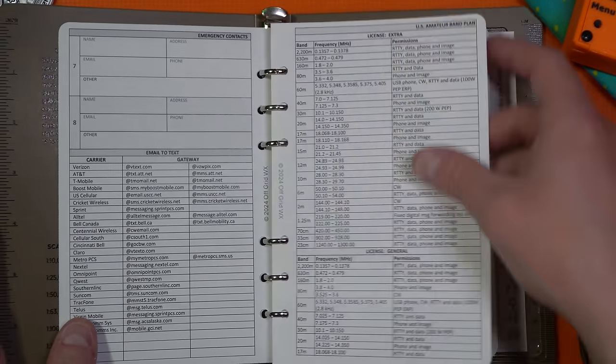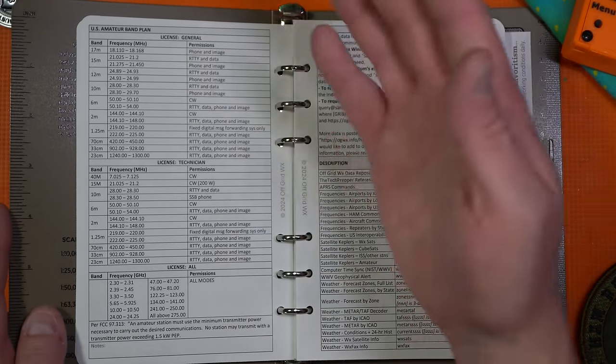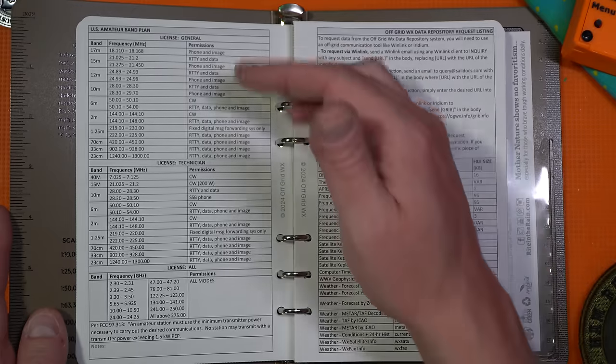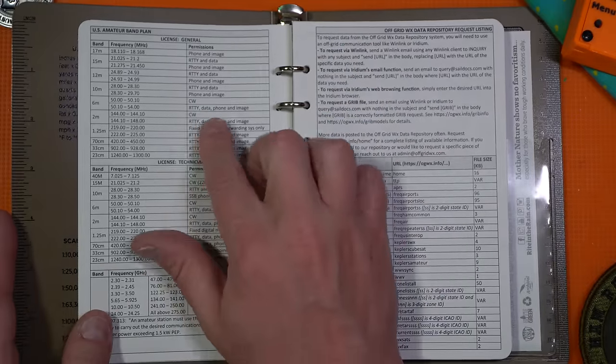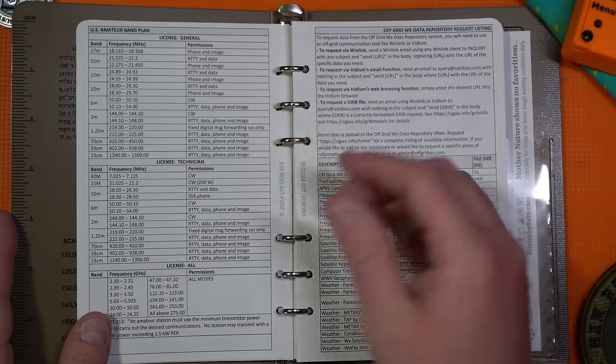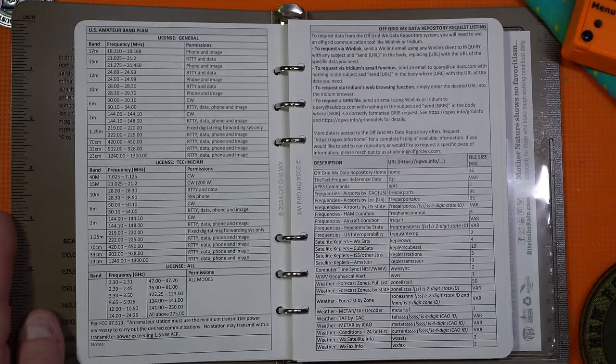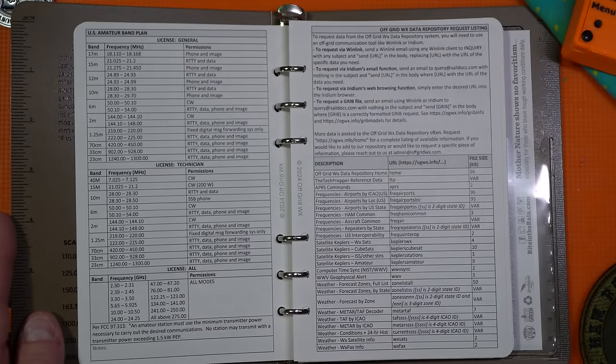Then it covers the band plan, US Amateur Radio band plan, so that's kind of useful for those of you that don't remember it. I certainly don't, particularly when it comes to breaking some of this stuff down. So for instance, if we go to 10 meters, it tells you where the Ridian data portions are versus phone and image. Obviously, single sideband is what we're talking about here. License for technician, general, breaks that down. Different license modes.